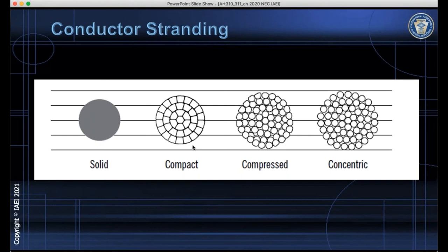Now it's important to realize it doesn't matter which of these stranding methodologies you use. The ampacity is based on the AWG or circular mill size. So it doesn't make a difference if it's solid, compact, compressed, or concentric when you're calculating ampacity.